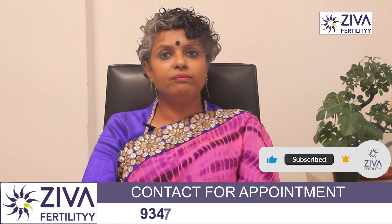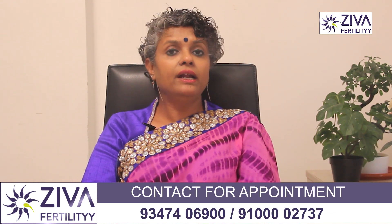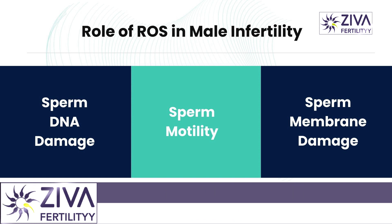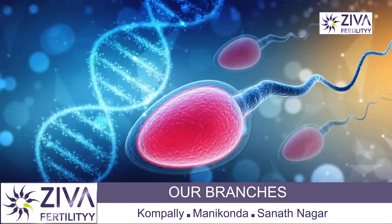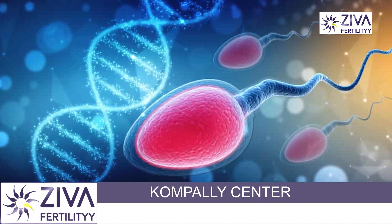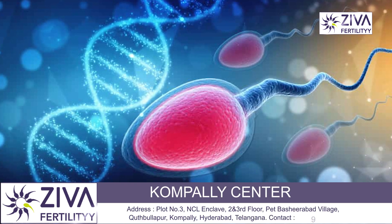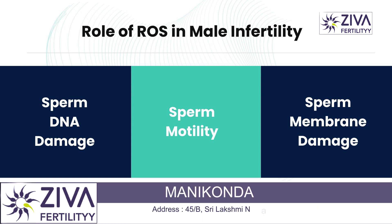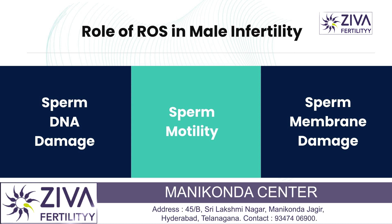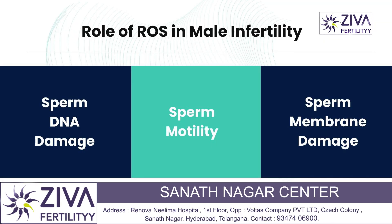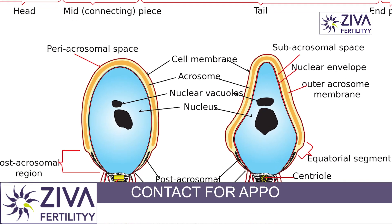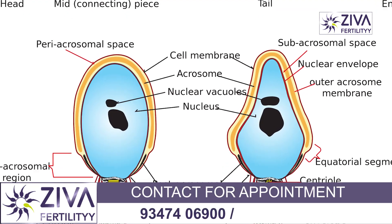Now let's look at the role in male infertility. In the context of male infertility, ROS can have detrimental effects on sperm health and function. ROS can cause breaks and mutations in sperm DNA, leading to genetic abnormalities in offspring or infertility. ROS-induced damage to the sperm's tail can impair its ability to swim effectively. ROS can also damage the sperm's outer membrane, reducing the ability of the sperm to penetrate the egg and bring about fertilization.